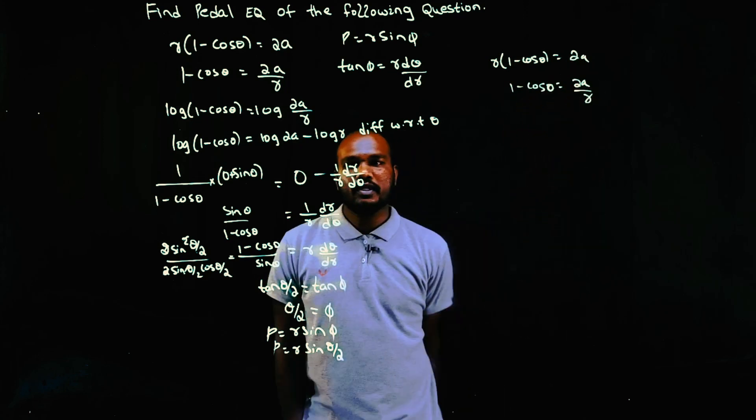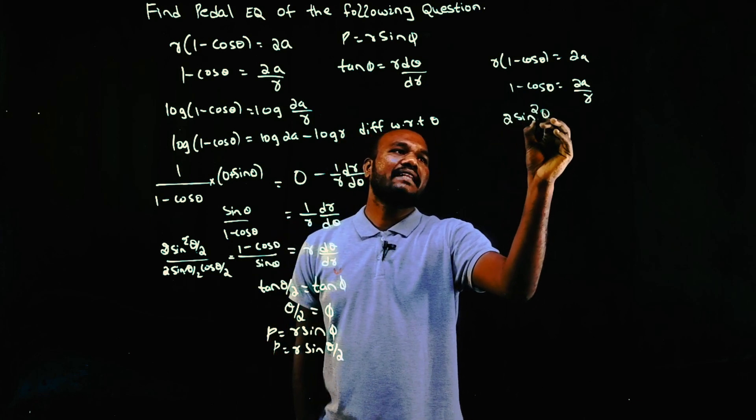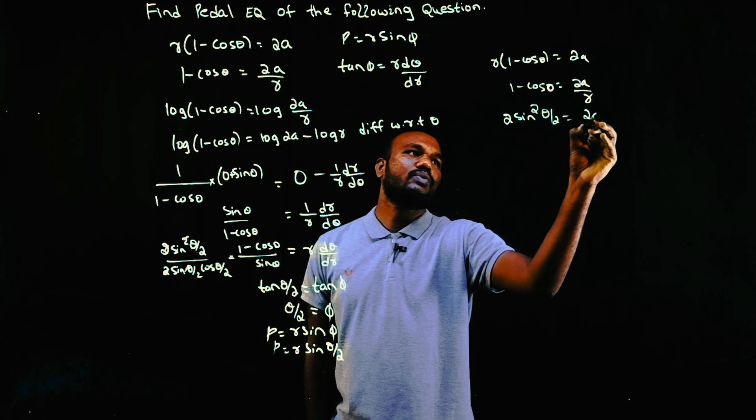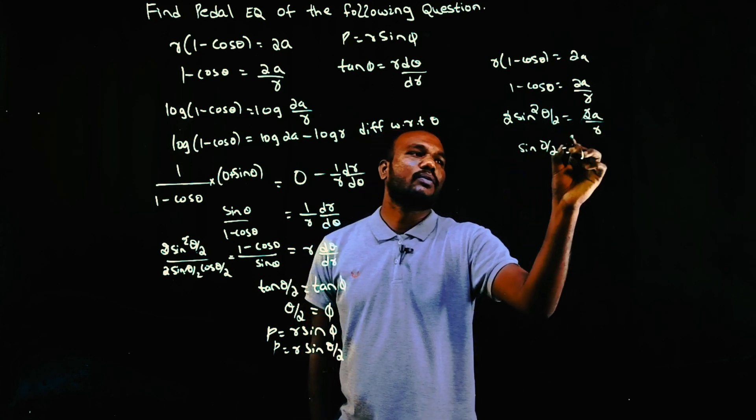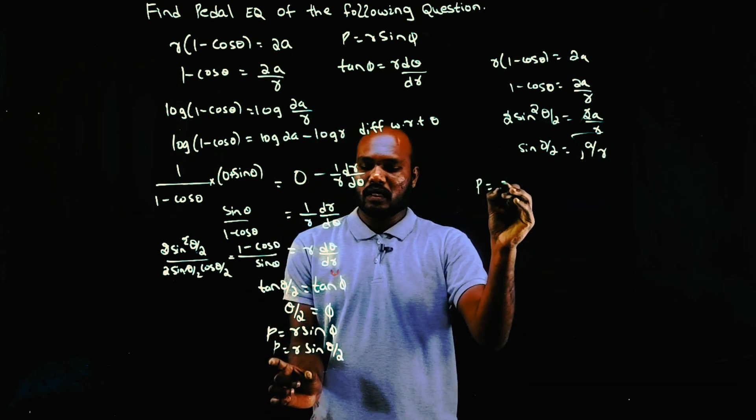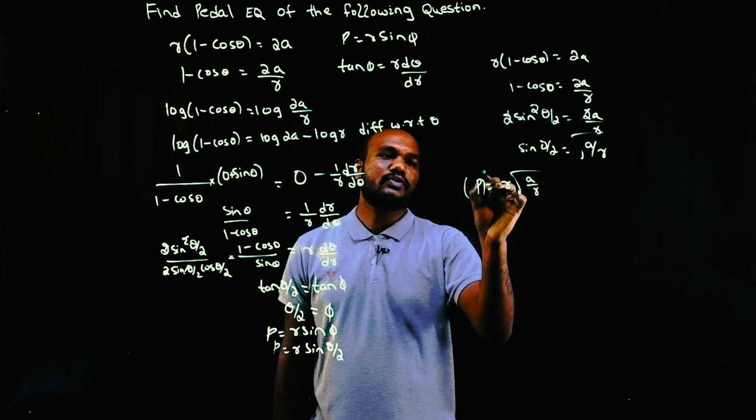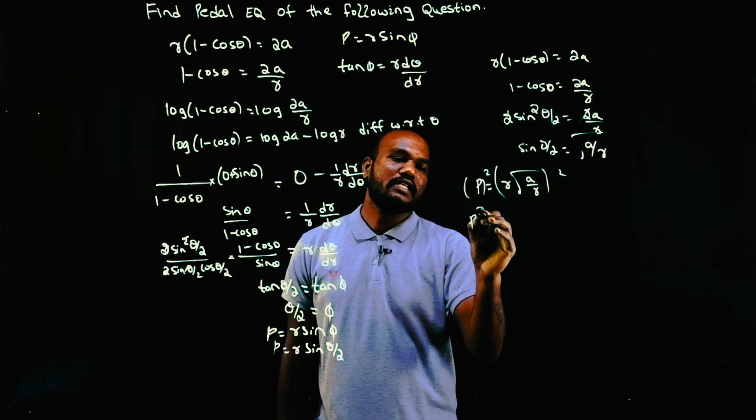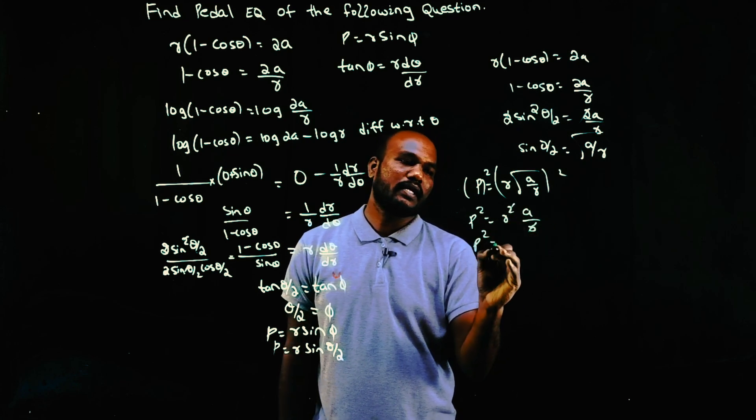The 2s cancel: sin(θ/2) = √(a/r). So p = r sin(θ/2) = r√(a/r) = √(ar). To make it prettier, square both sides: p² = ar. That's the answer - p² = ar. Is that simple? Yes.